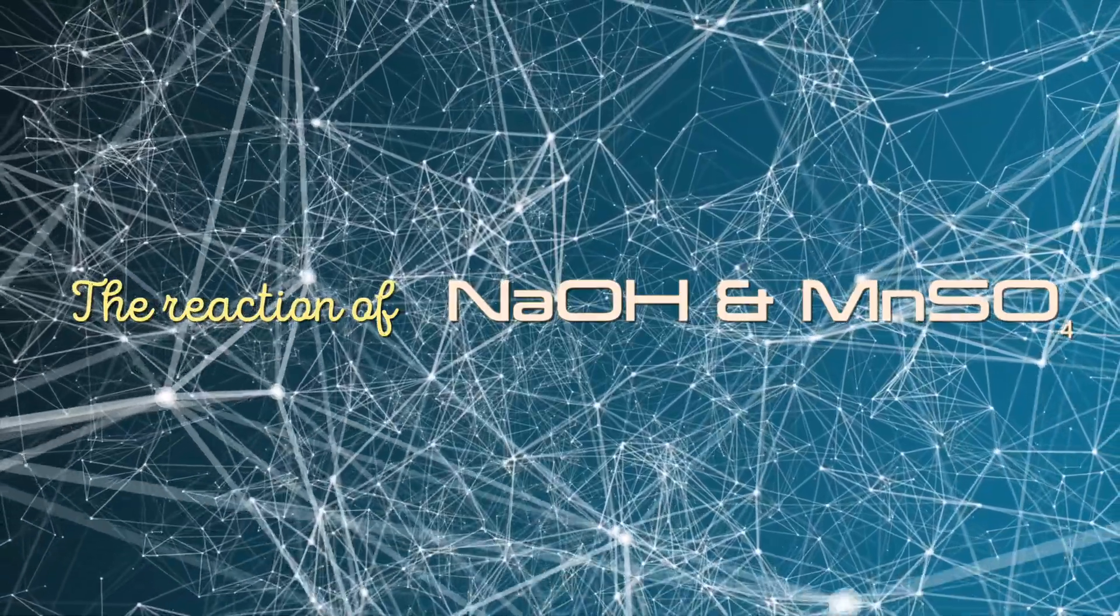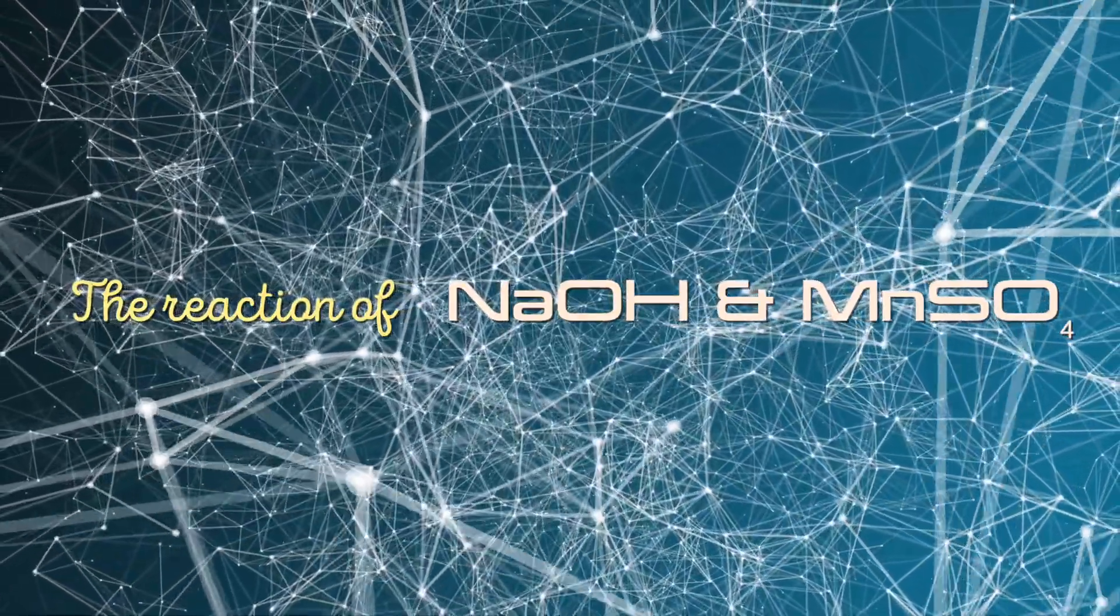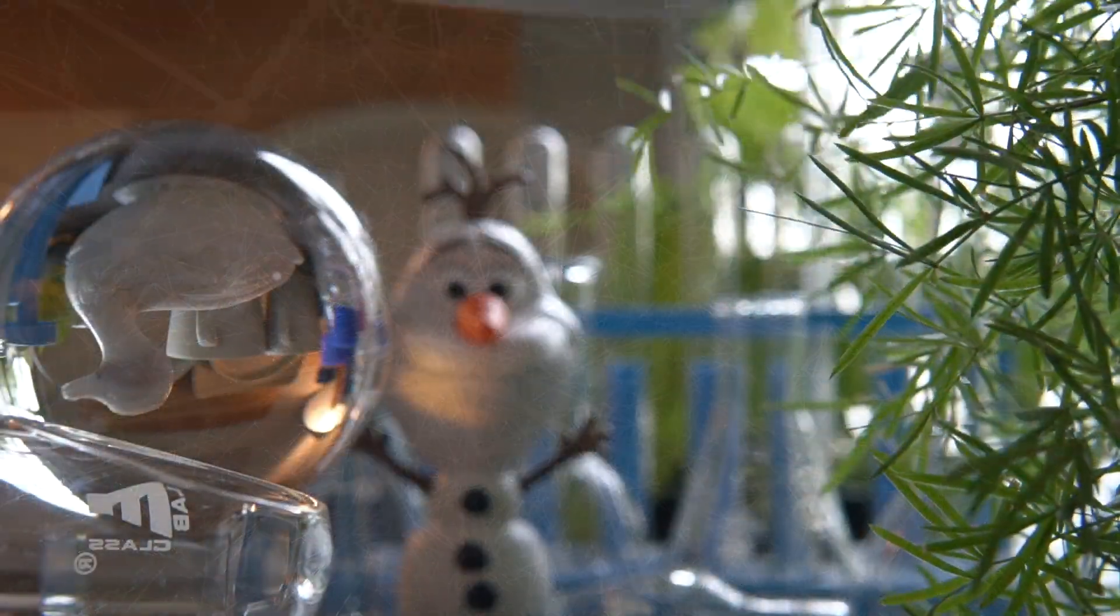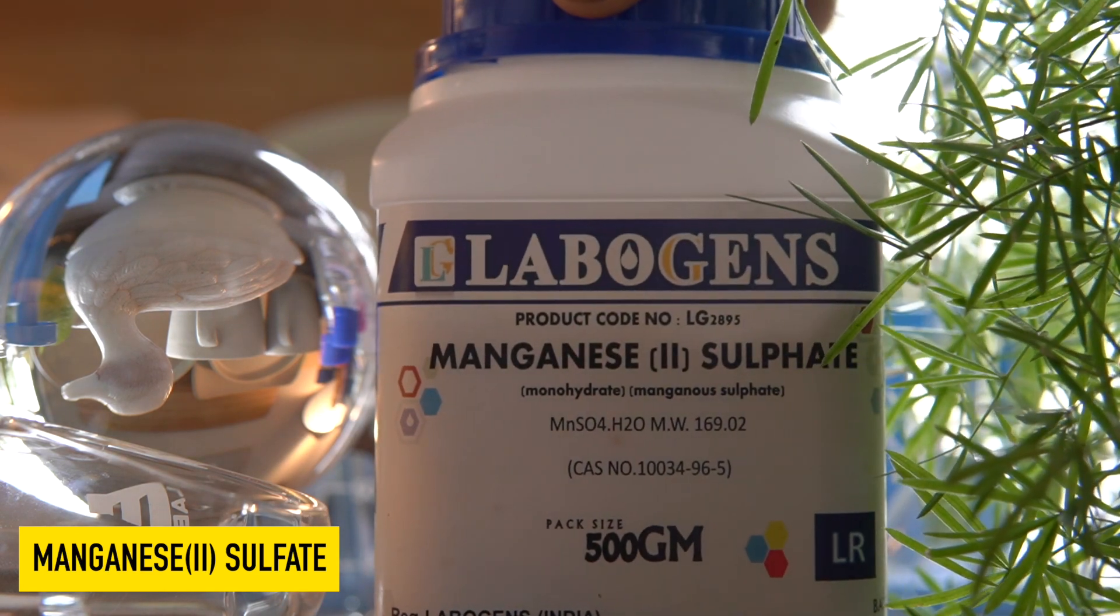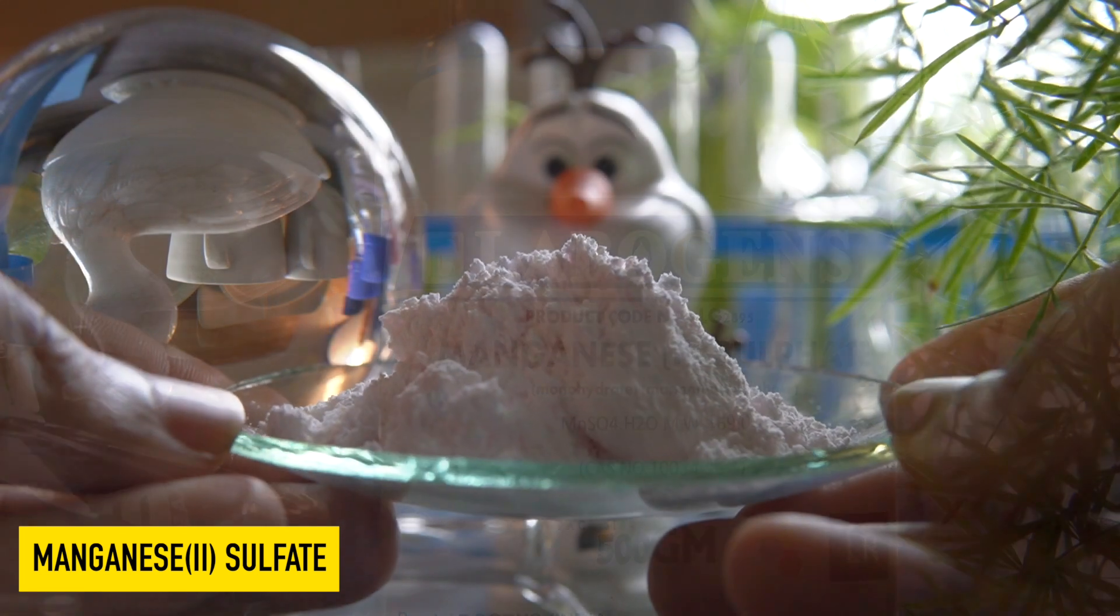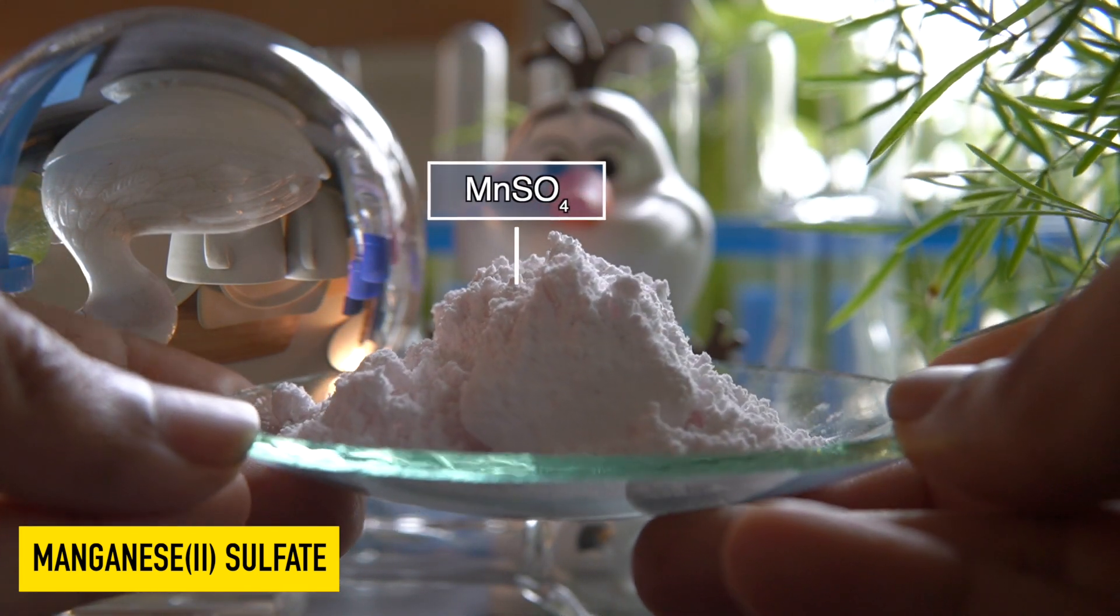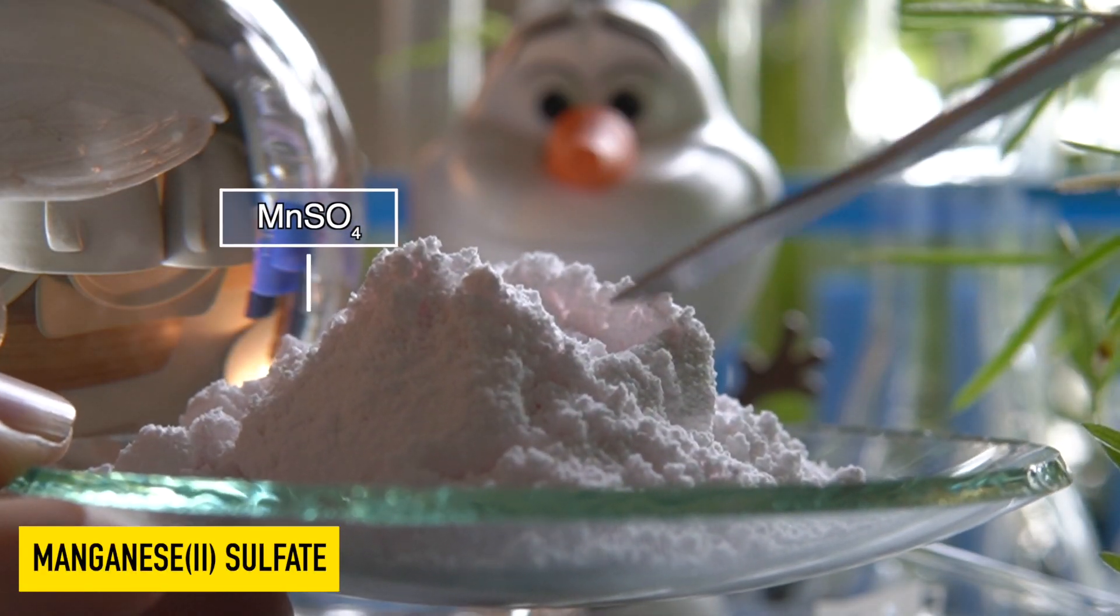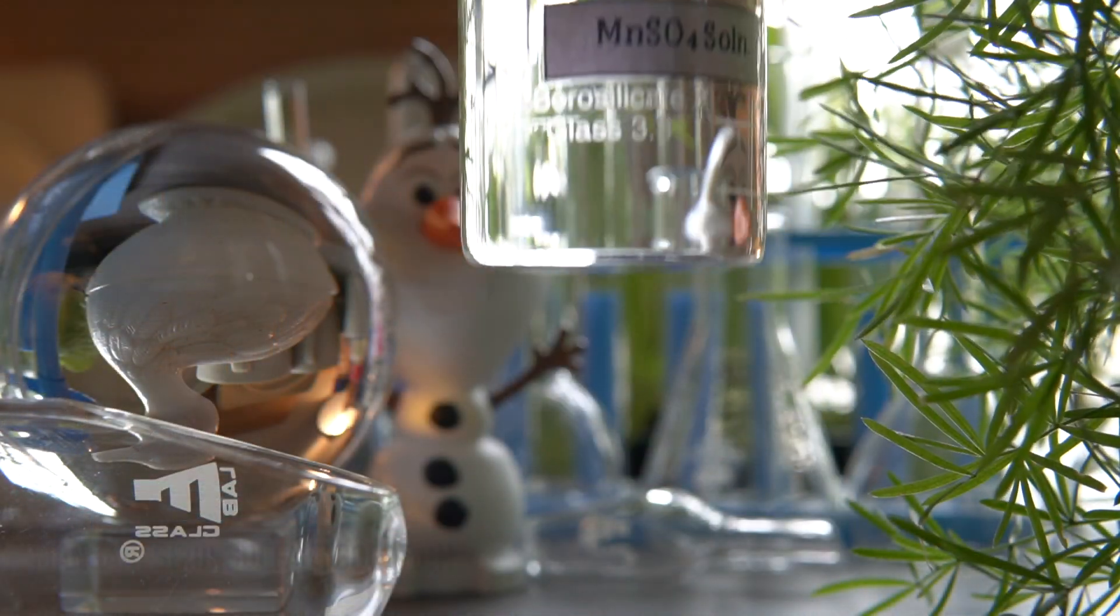Today we are going to discuss the chemical reaction between sodium hydroxide and manganese(II) sulfate. This is MnSO4 salt, slightly pinkish in color and highly soluble in water, so it can easily dissolve in water to make a homogeneous solution.